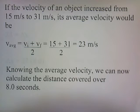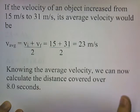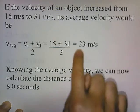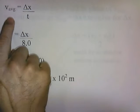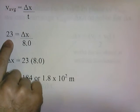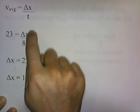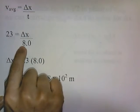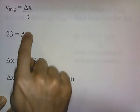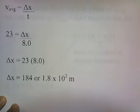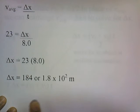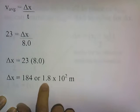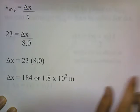Now knowing the average velocity of 23 meters per second, we can calculate the distance covered over 8 seconds. Using the formula for average velocity, average velocity equals 23, and solving for x over the 8-second time period — multiplying both sides by 8 — gives 23 times 8 equals 184. Since we want two significant figures, we write this as 1.8 times 10 to the 2 meters. That's the distance covered.